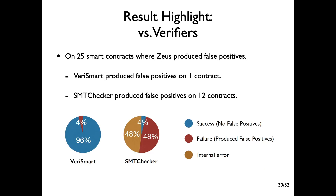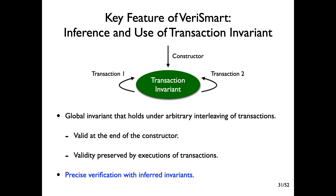We also compared VarySmart with two recently developed verifiers. On 25 smart contracts where Zeus produced false positives, VarySmart produced false positives on only one contract. By contrast, SMT Checker showed less precise results, producing false positives on 12 contracts. What is the key distinct feature that makes VarySmart outperform existing approaches?